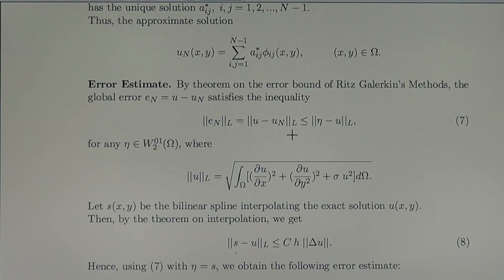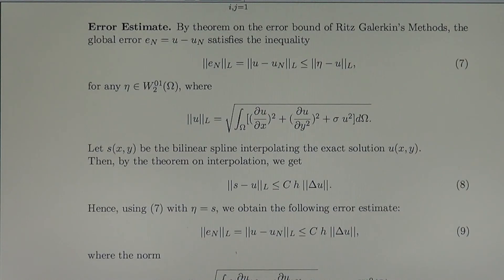Of course, it is in the energetic norm, in the L-norm. Then, this L-norm, we remind, is that in which we have involved the first derivatives of the exact solution as well as the values of the function. So in the case, to get the error bound, let S be the bilinear spline interpolating to the exact solution.